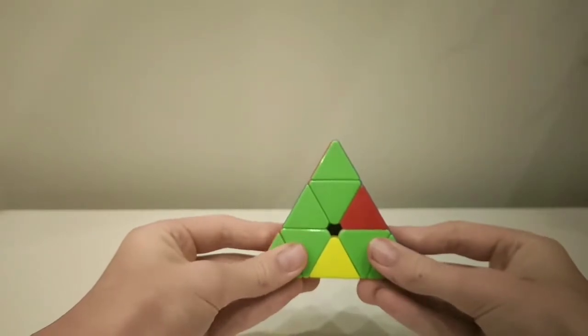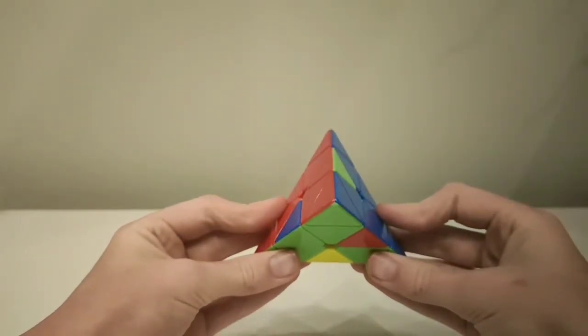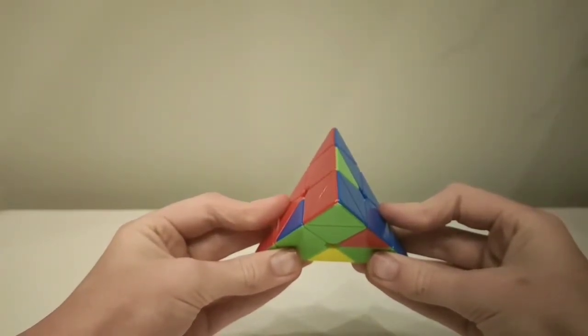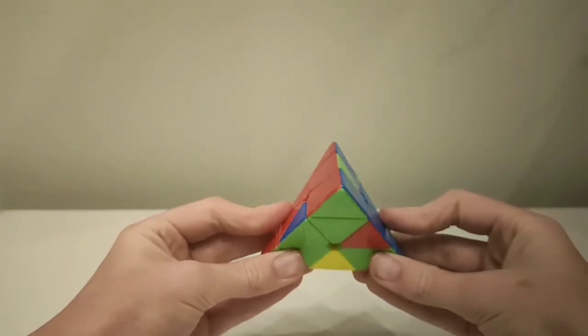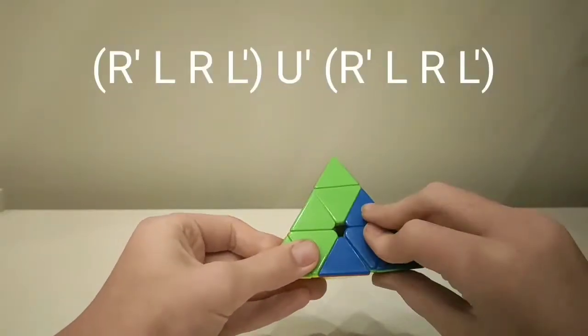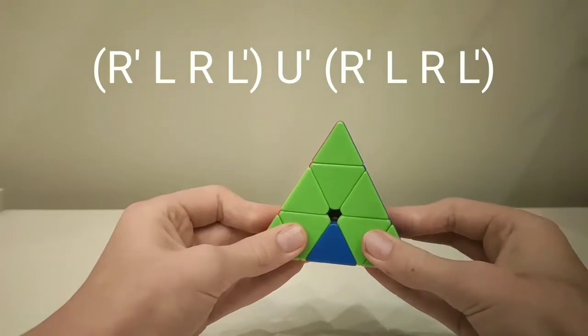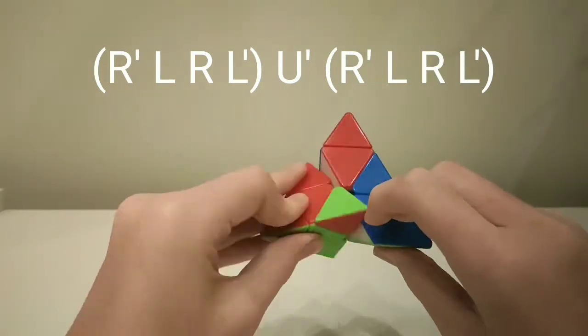This is the fourth case, where there are three bars, all pointing down to the left. The algorithm for this is R' L R' L' U' R' L' R' L.